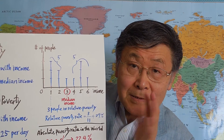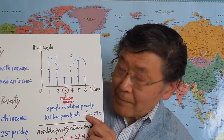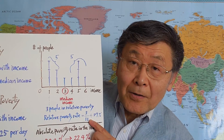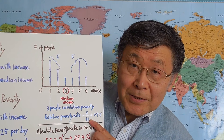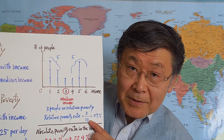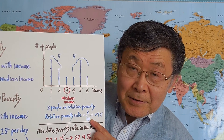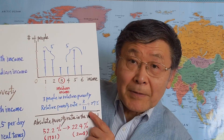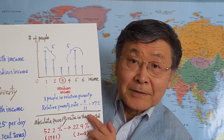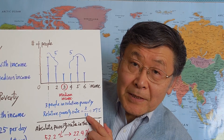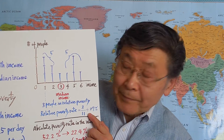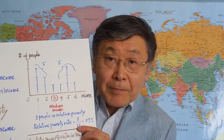27% is very high, but it's around the typical percentage for developing economies. Among developed economies, this number is about half — around 10% or 15% at most. That's relative poverty.